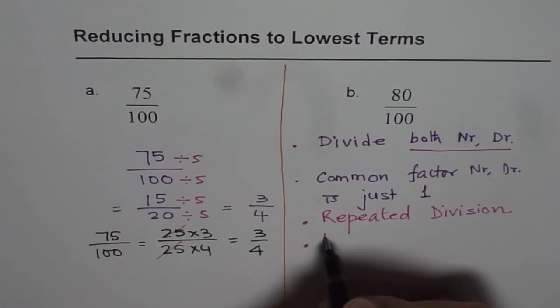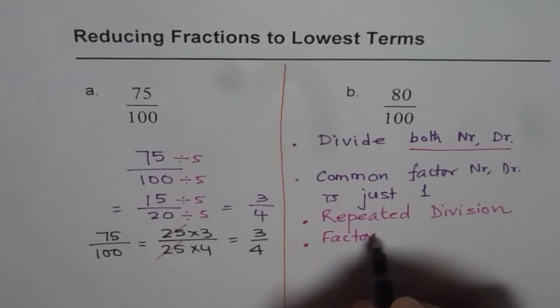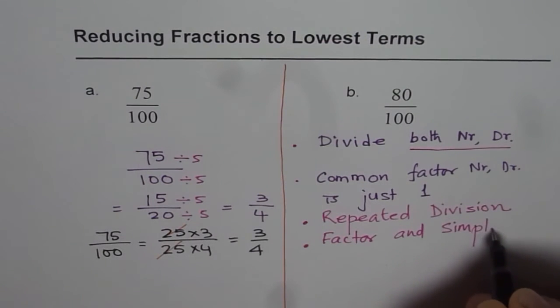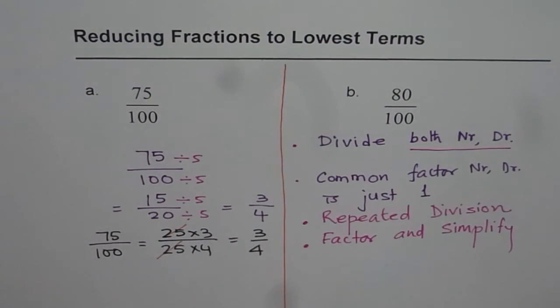And the second method which I will say is to factor and simplify. These are the two ways we can definitely do reducing fractions to lowest terms.